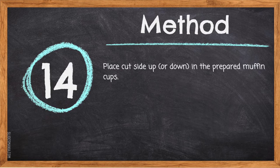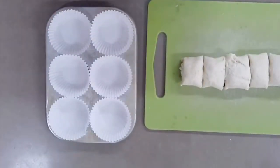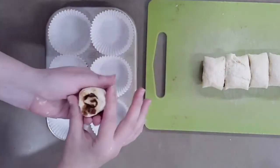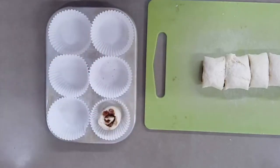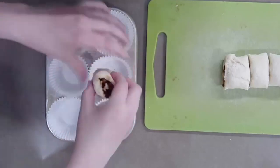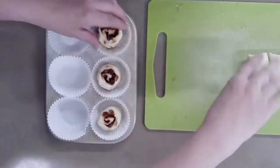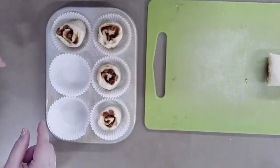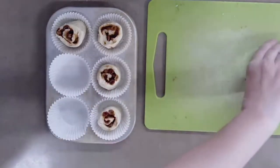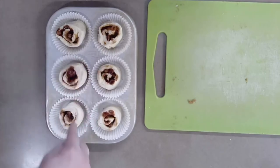Step 14: Place cut side up or down in the prepared muffin cups, making sure you can see the swirl of the cinnamon roll. Reshape the rolls back into their circular form in your hand if they were squished by the knife. Don't worry if the cinnamon rolls are smaller than the muffin tin — they expand in the oven and will fill the whole cup.